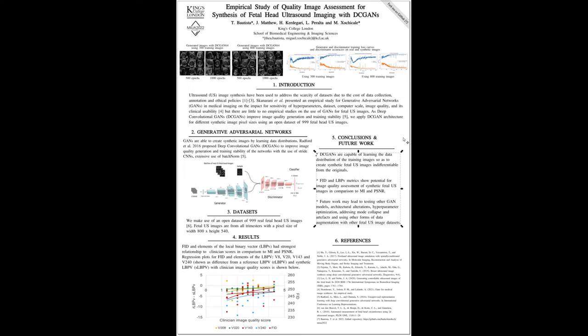In terms of conclusion and future work, DCCANs are capable of learning the data distribution of the training images so as to create synthetic fetal-Hell Ultrason images indifferentiable from the originals. FID and LBPB metrics show potential for image quality assessment of synthetic fetal-Hell Ultrason images in comparison to mutual information and peak signal noise to ratio.